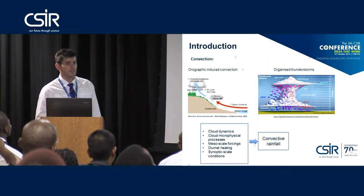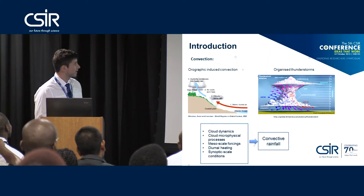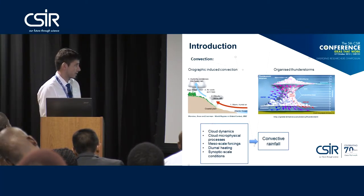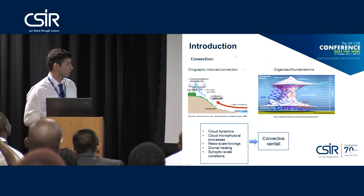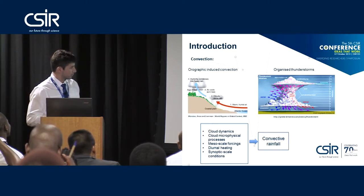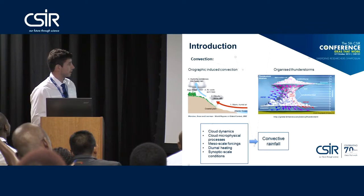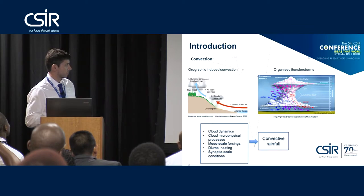We have to look at the type of systems that influence our weather over the eastern escarpment of South Africa. One of the predominant systems, especially over the eastern escarpment, is orographic-induced convection because the topography is steep in the area. Warm air comes in from the ocean, is pushed up against the mountain, cools rapidly, water condenses, forms clouds, and you get rainfall. Normally associated with this is forest that we can see in regions of steep topography.